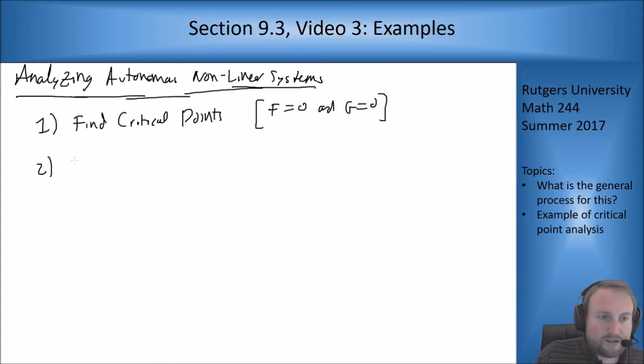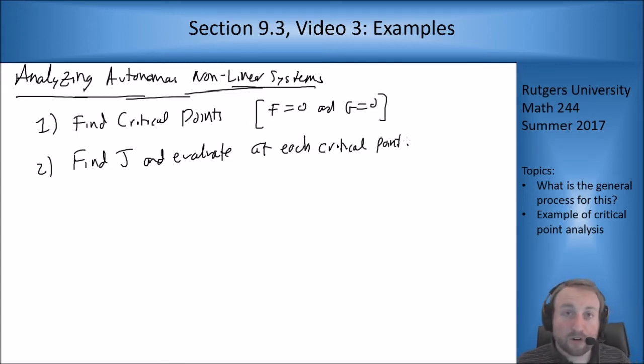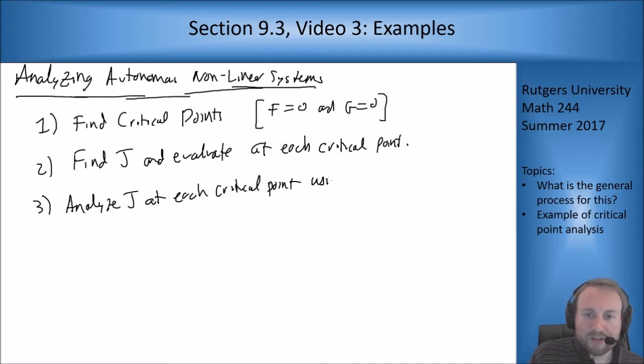Two, find the Jacobian J and evaluate at each critical point. If you have three critical points, you'll get three different matrices for J, one at each critical point. Then step three: analyze J at each point using linear system methods to get the type of each critical point.